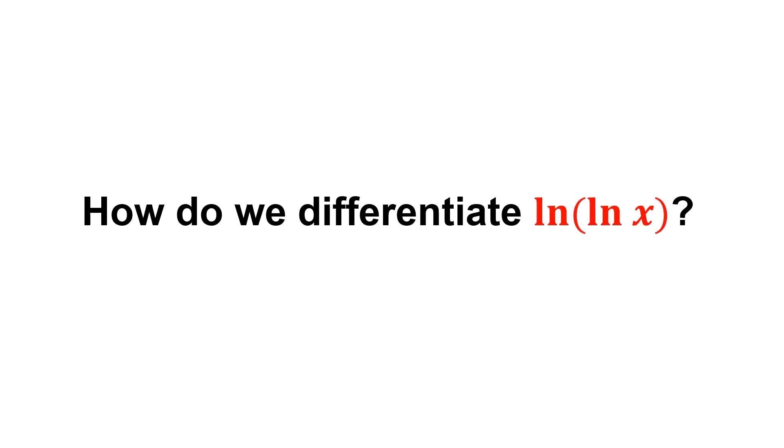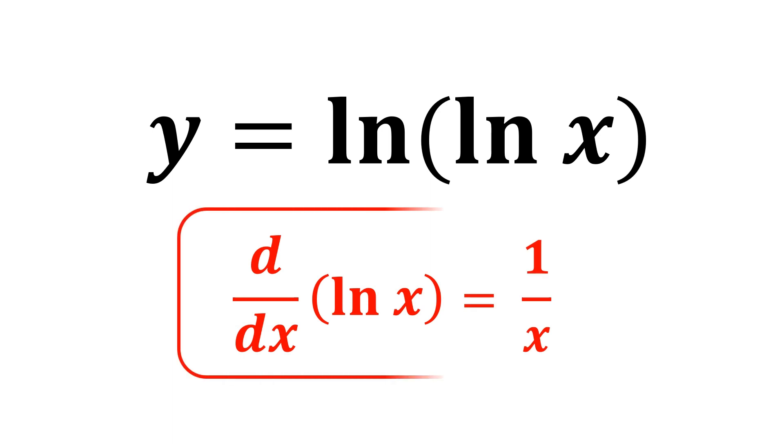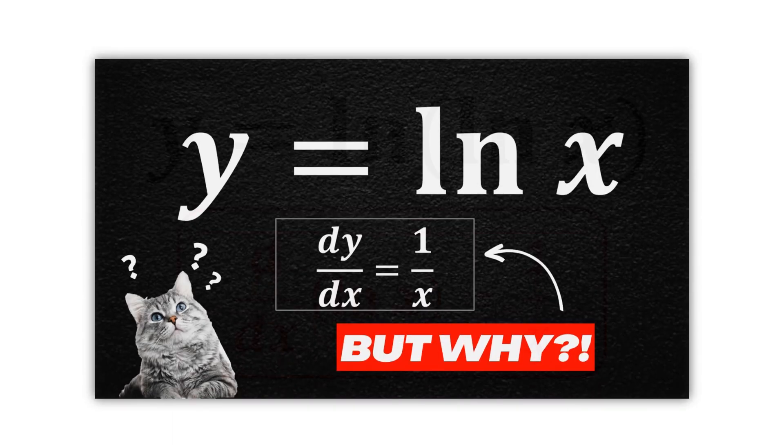How do we differentiate natural log of natural log of x? We all knew that the derivative of ln x is 1 over x, and that's what we have discussed in my previous video.